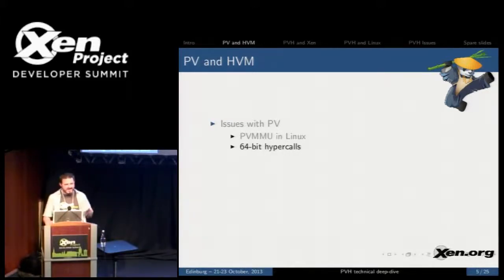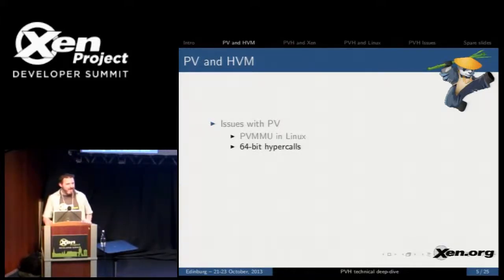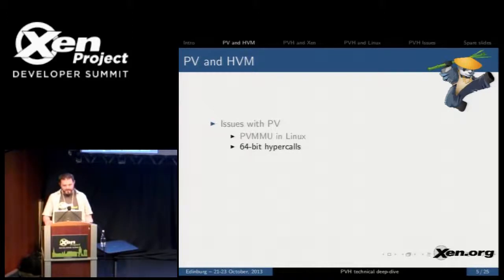About the same time that Xen was finding a new use for this basically unused processor feature, the AMD folks were coming up with their new 64-bit architecture. And I presume what happened was they said, well, here's this thing that nobody actually uses, and every additional feature in a processor is expensive to implement, so they just got rid of it, which means that now for 64-bit, we don't have three levels of protection anymore.